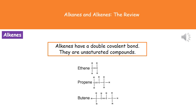One important thing about alkenes is that they have a double covalent bond, which means they are unsaturated compounds. If the exam paper asks what 'unsaturated' means, your answer is that it has a double covalent bond, or a double bond present.